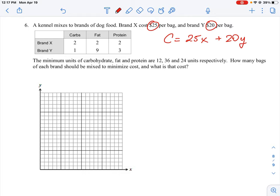And Brand Y has one unit of carb, nine units of fat, and three units of protein. So that gives us something to think about, like how much carbs would we have if we had X bags of Brand X and X bags of Brand Y. So it would be two times X plus one times Y. If we add those two together, that's how much carbs we would have. And then it further goes on to say here, the minimum units for carbohydrate and fat and protein are 12, 36, and 24 units respectively.